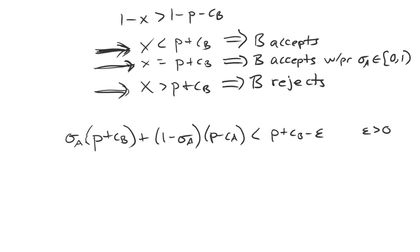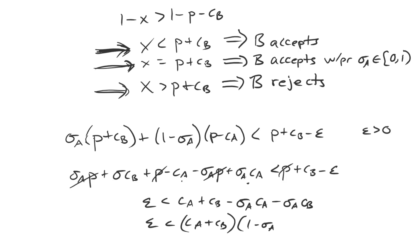To do that, it might help if we distribute everything out on the left-hand side. Let's go ahead and do that. Sigma A times P plus sigma CB. Foil that. We have P minus CA. We have sigma P and then we have plus sigma CA less than P plus CB minus epsilon. We'll notice that we have a sigma A and a negative sigma A times P in both cases. Those cancel out. We also have a P on both sides. Those cancel out. And what we're left with is some epsilon having to be less than, if we move CA over to the other side, we have CA plus CB. We also have, now subtracting out onto the other side, a sigma alpha CA and a sigma alpha CB, which can then be reduced to, or combining terms, CA plus CB times 1 minus sigma A.